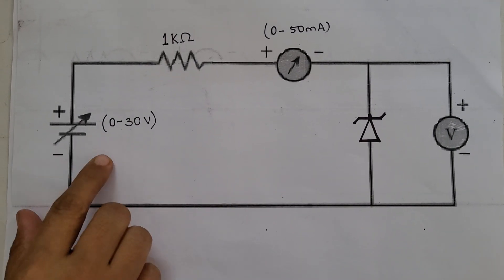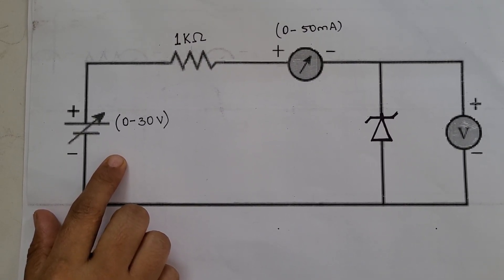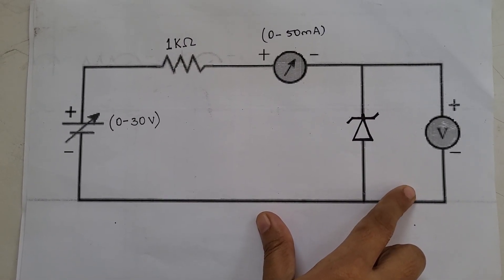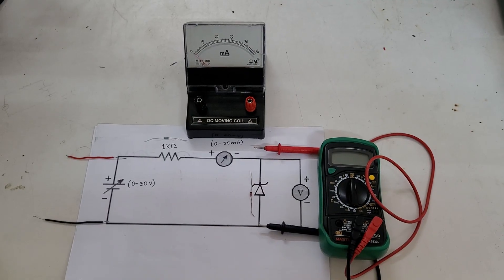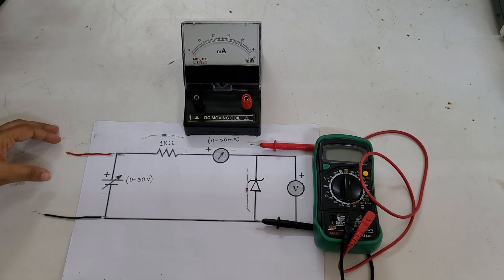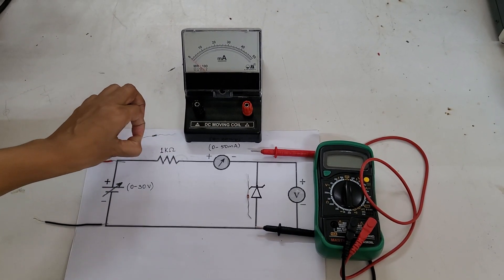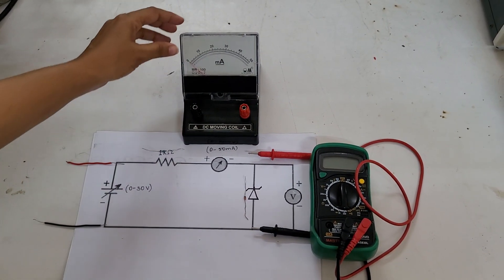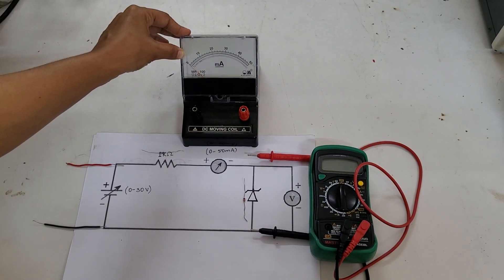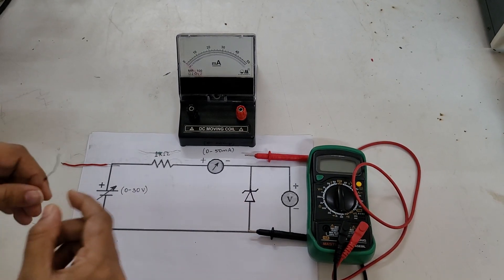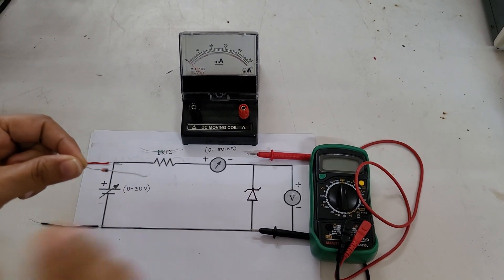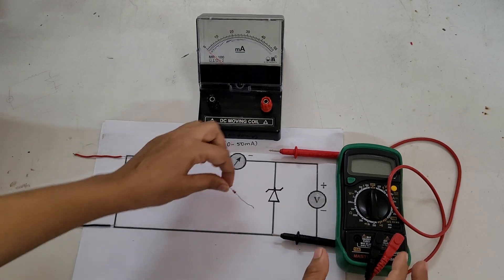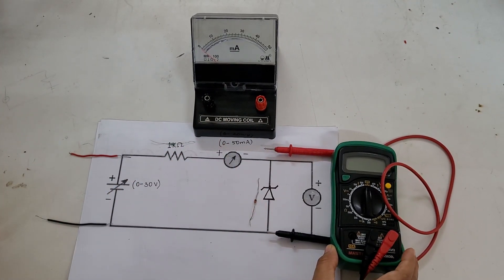This is the circuit diagram. We need a 0–30V DC power supply, a 1kΩ resistor, a milliammeter, a Zener diode, and a multimeter in order to read the output. The 1kΩ resistor has a color code of brown, black, and red. The milliammeter reads from 0–50 mA. For the Zener diode, the black color ring denotes the negative terminal, and we need a multimeter to read the output voltage.